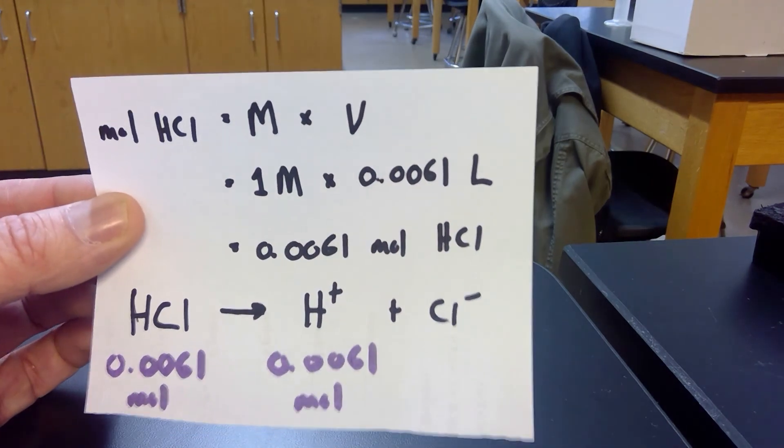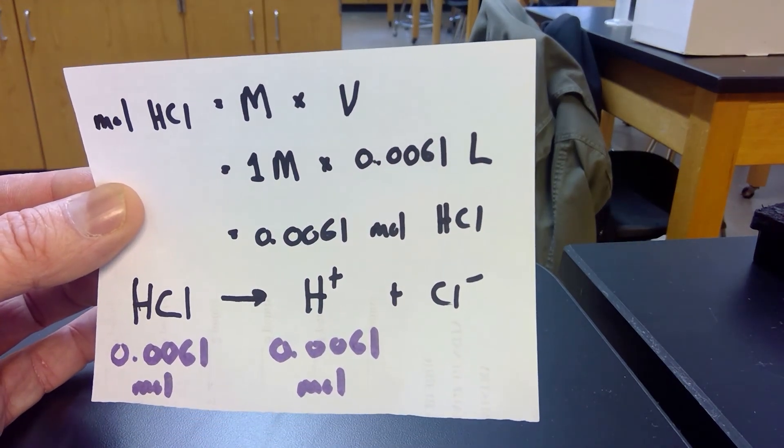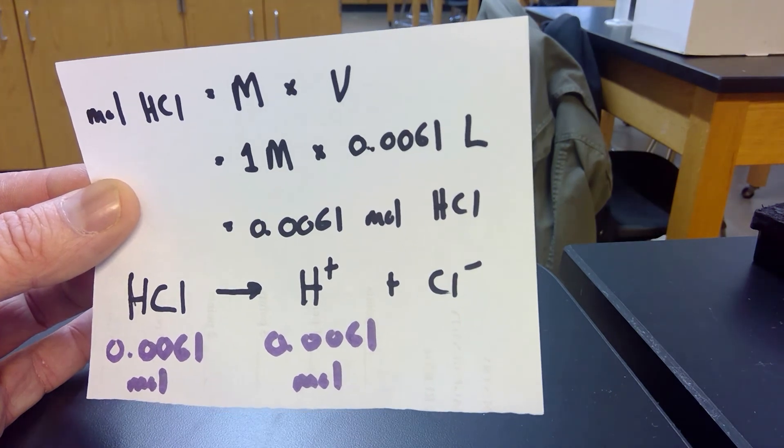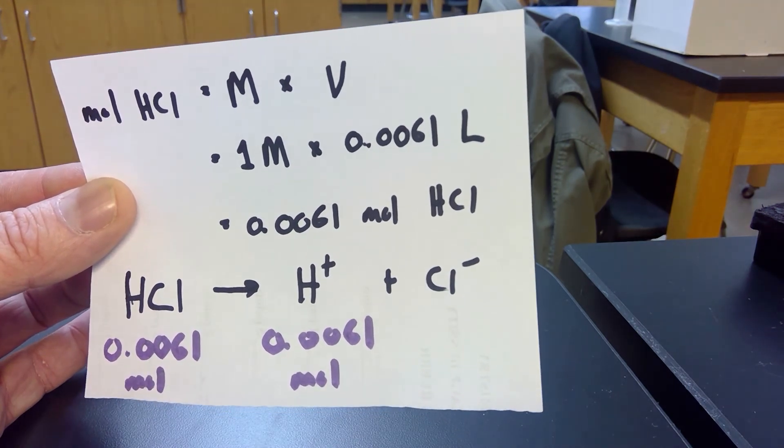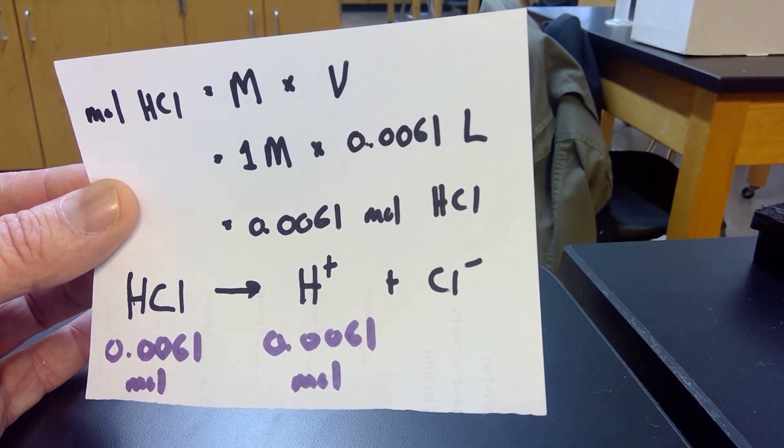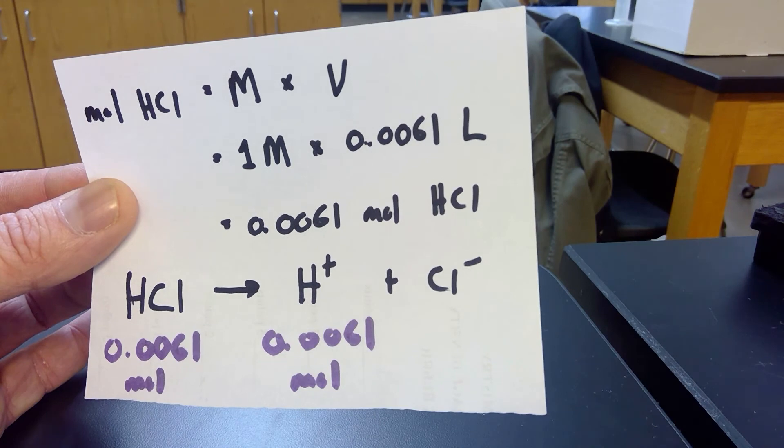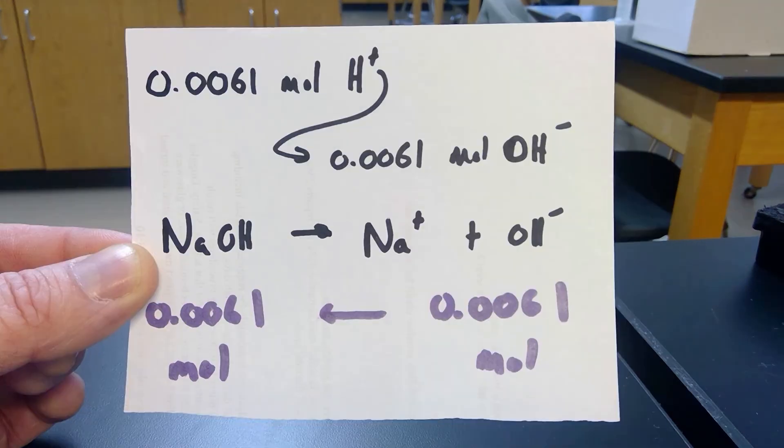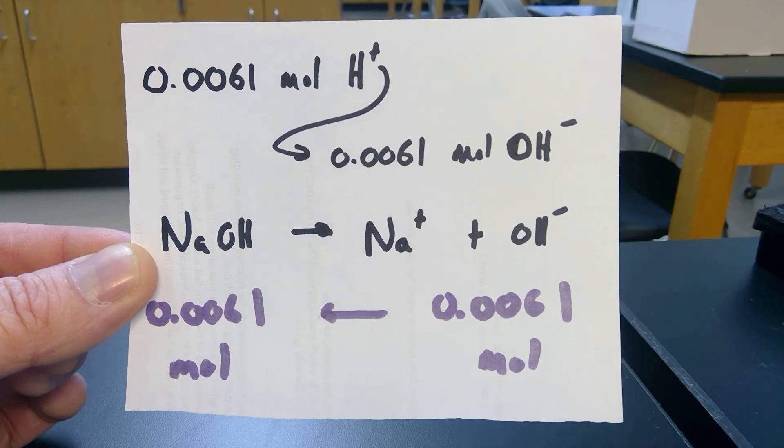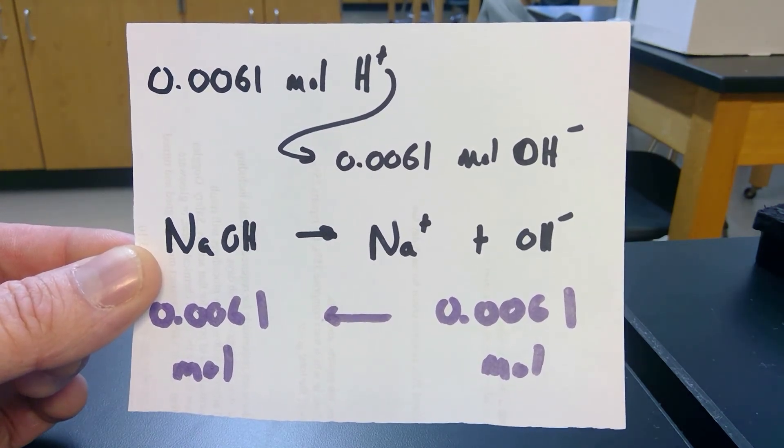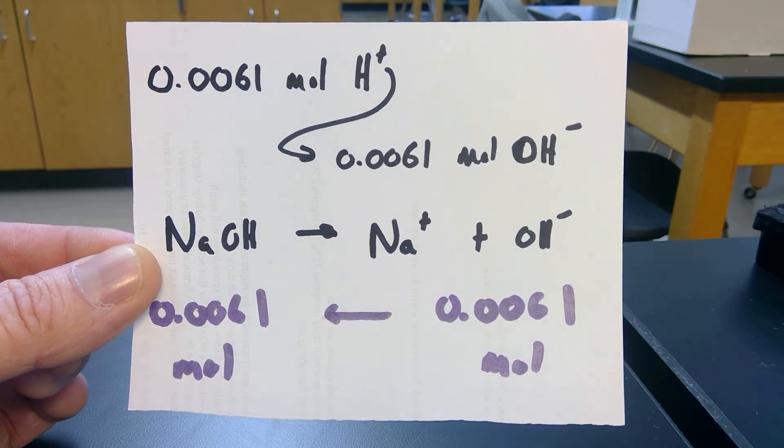That means if we used 0.0061 liters, which is 6.1 milliliters, and our concentration is 1 molar, that means we used 0.0061 moles of hydrochloric acid, and if it dissociates, that means we have 0.0061 moles of H+. If we had 0.0061 moles of H+ in solution, that requires exactly the same amount of moles of hydroxide to neutralize.